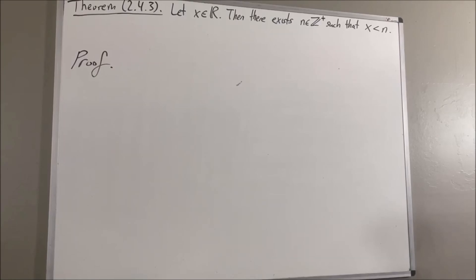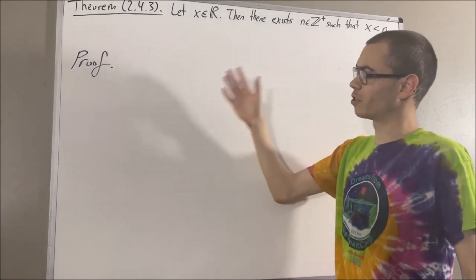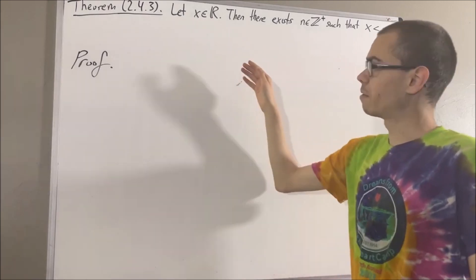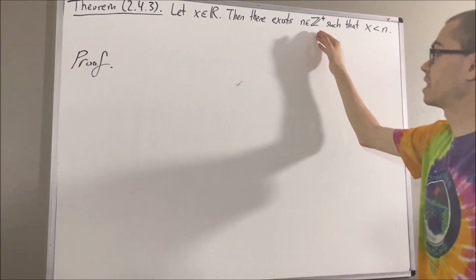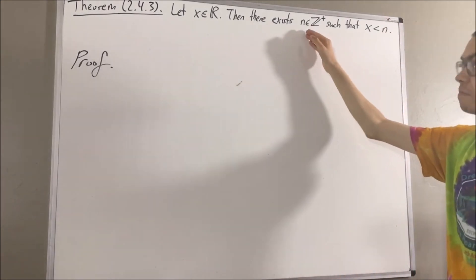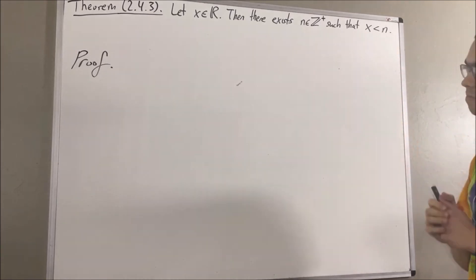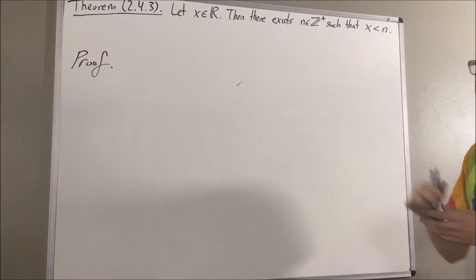Hello! In this video, we are going to prove the following theorem: Let x be a real number. Then, there exists a positive integer n such that x is less than n. Now let's get into the proof.